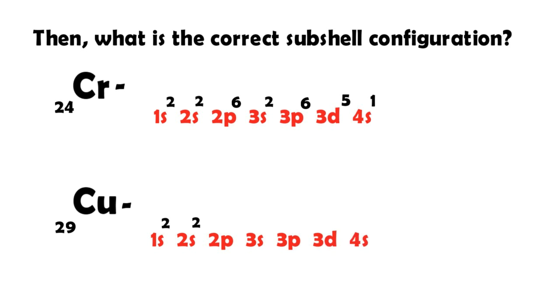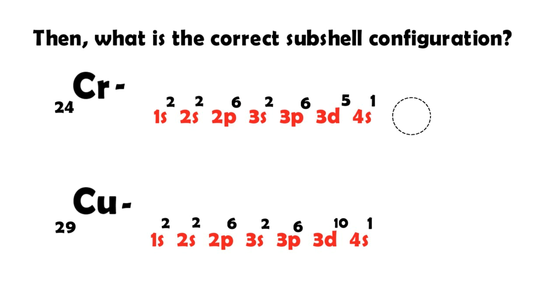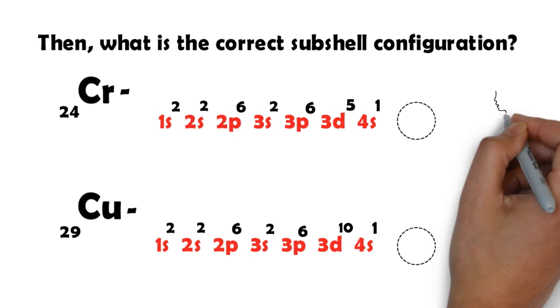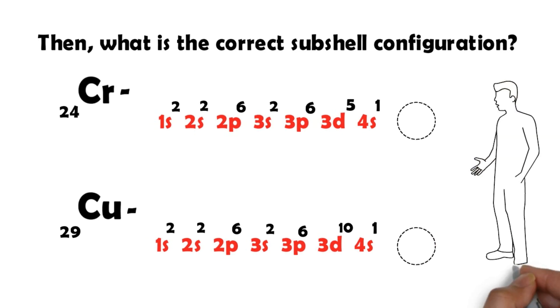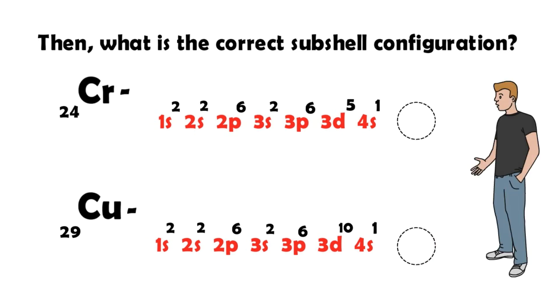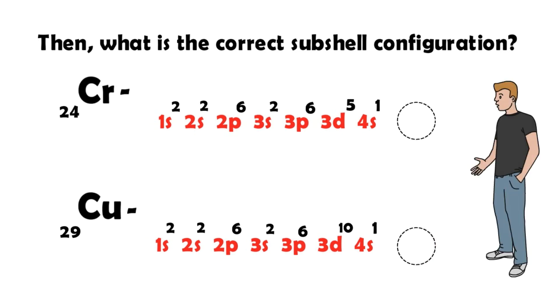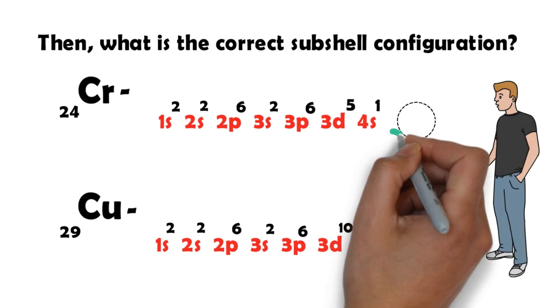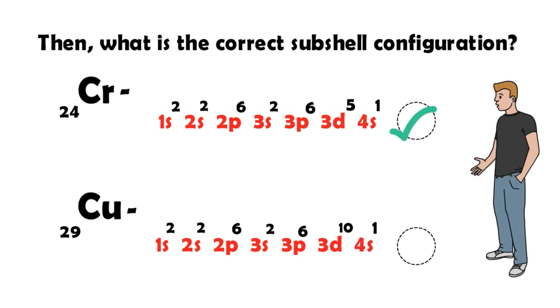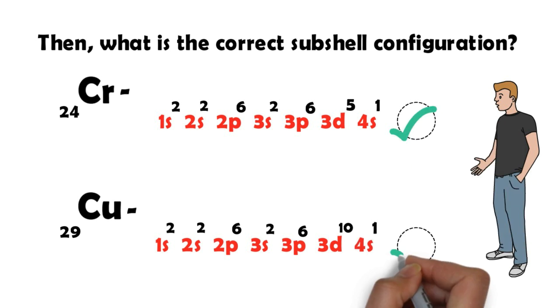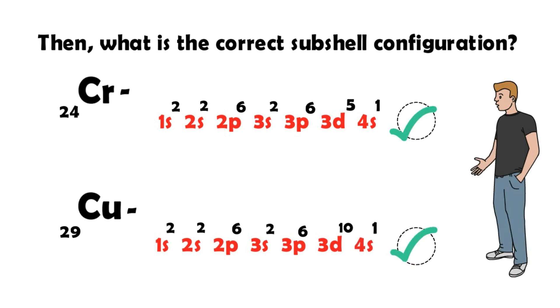We have 1s2, 2s2, 2p6, 3s2, 3p6, 3d10. If we have Chromium with electronic configuration, we have converted to the correct configuration. It's a 10-electron d-block configuration.